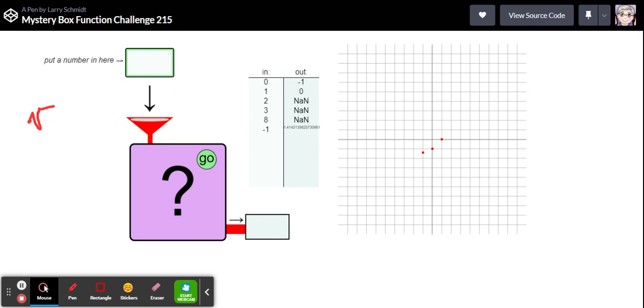So this is definitely confirming a square root. That 1.41, that's a decimal for the square root of two so let's try a negative two. Try negative three.